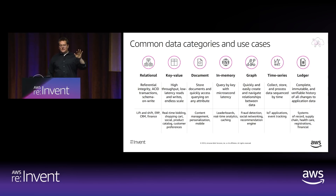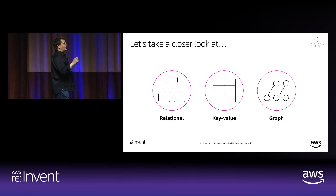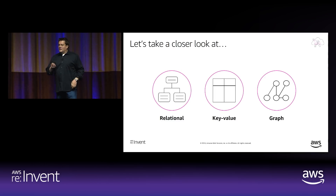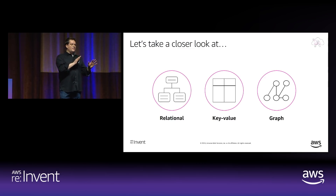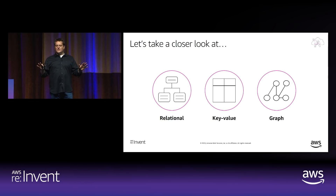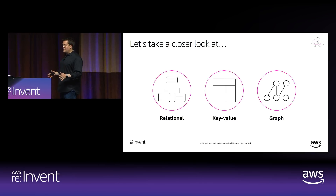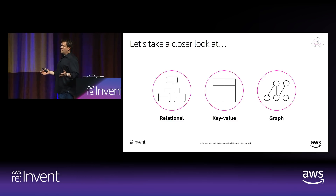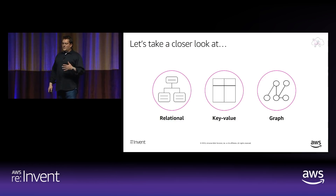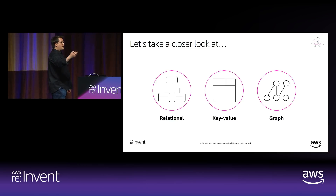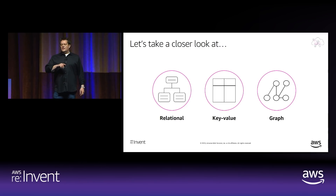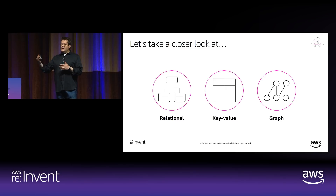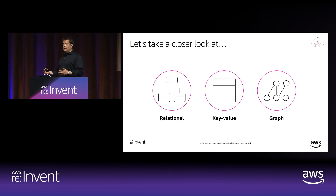Let's take a closer look at three categories: relational, key-value, and graph. I'm picking these three because they really illustrate how databases have gone from platform to more specialized over time. Relational emerged in the 70s, most of us are familiar with it. Key-value is a newer thing that starts to emerge in the 2000s. Graph really starts to emerge in the last 12 to 18 months. I don't think it's a coincidence that these more specialized databases are emerging at the same time as modern cloud apps.